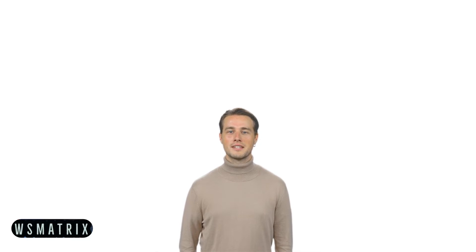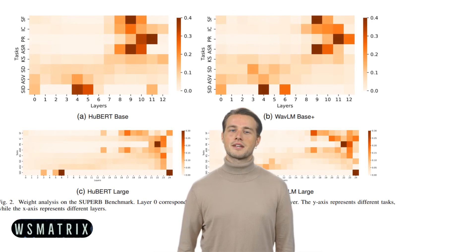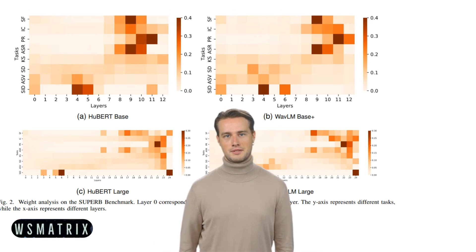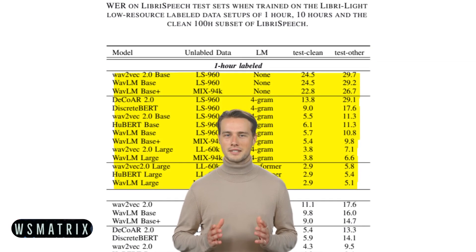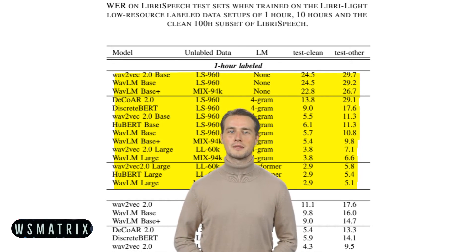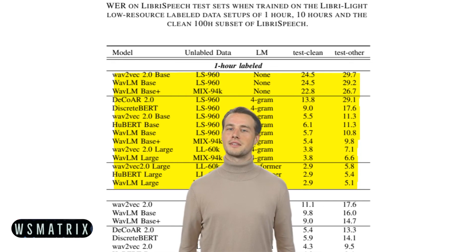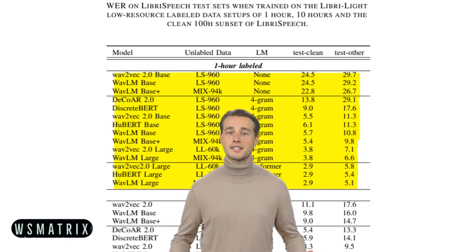WAV-LM was evaluated on a number of different benchmarks, including the LibriSpeech Speech Recognition Benchmark and the WMT Machine Translation Benchmark. The model achieved state-of-the-art results on all of the benchmarks. On the LibriSpeech Speech Recognition Benchmark, WAV-LM achieved a word error rate of 3.2%. This is a significant improvement over previous models. On the WMT Machine Translation Benchmark, WAV-LM achieved a BLEU score of 42.0. This is also a significant improvement over previous models.